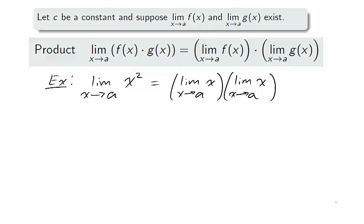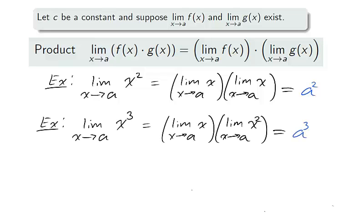Similar to the sum law, the product law states that functions can be producted before or after the limit is taken. Since we know the limit of x exists, x squared approaches a squared as x approaches a.